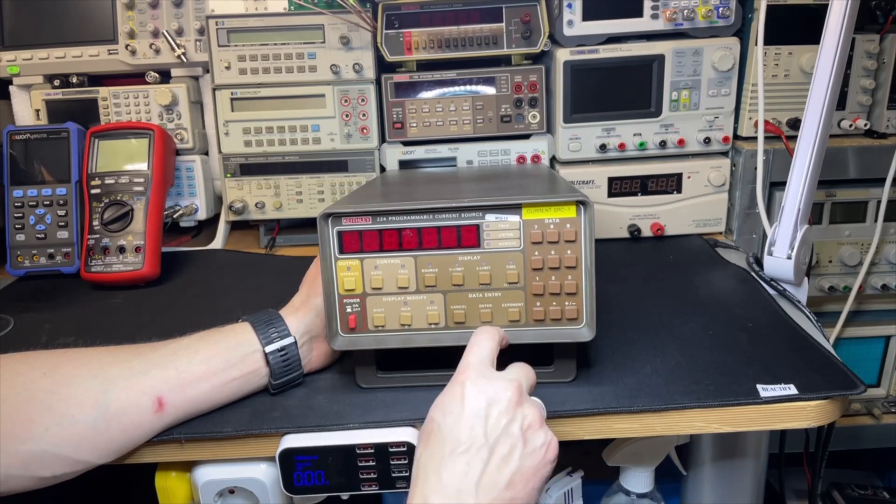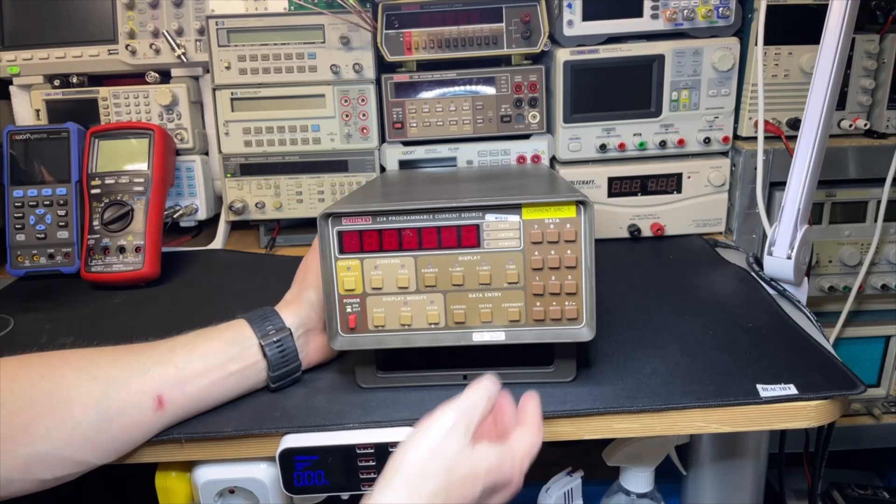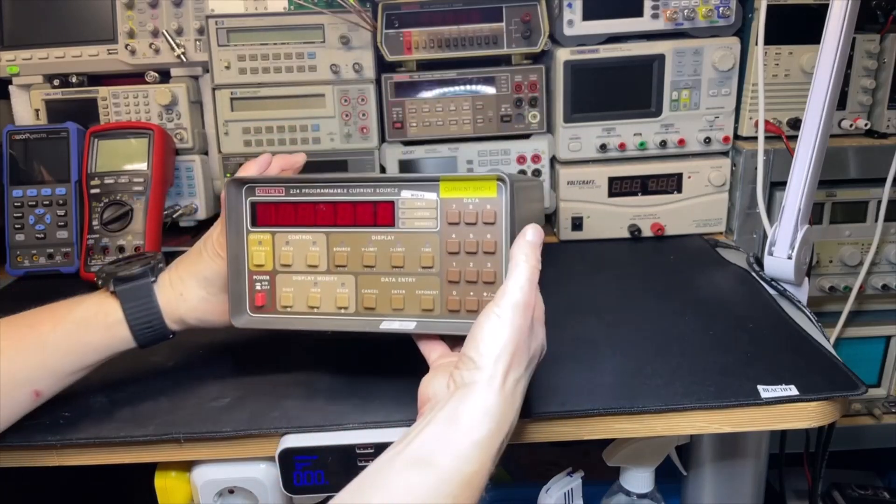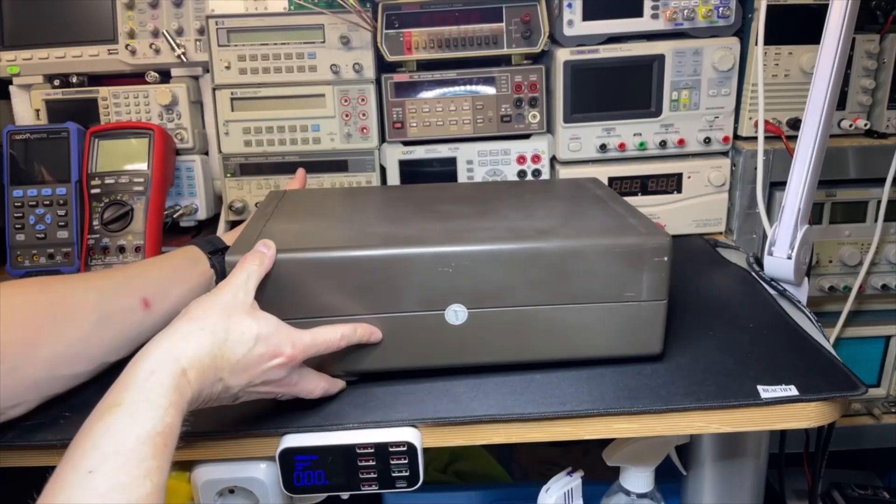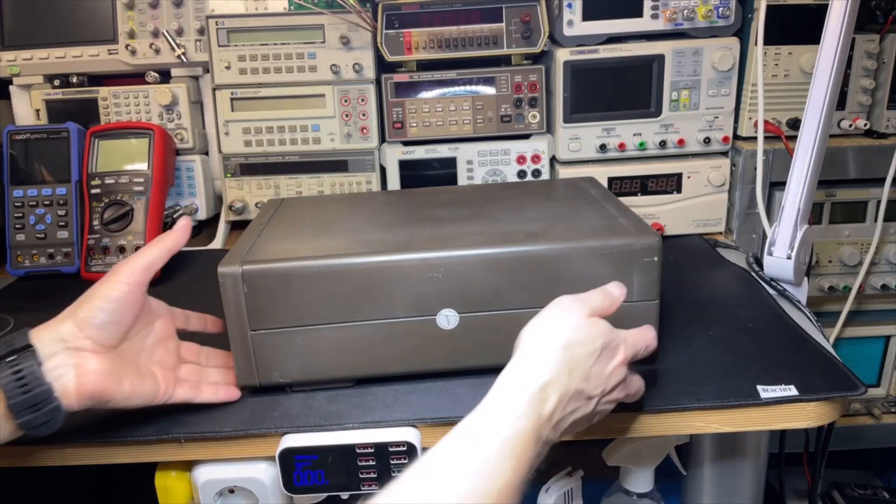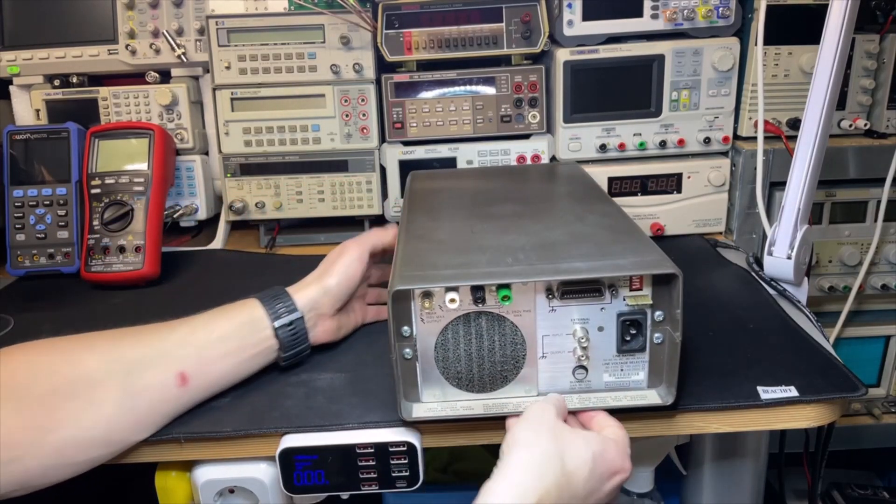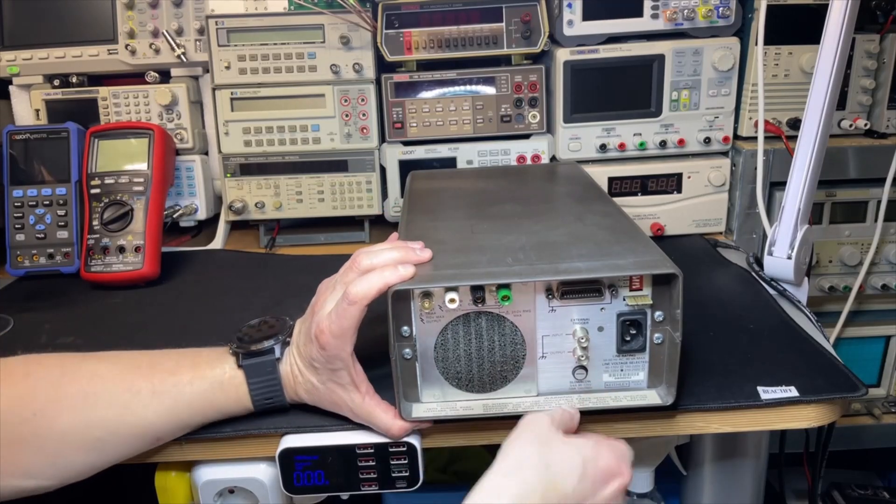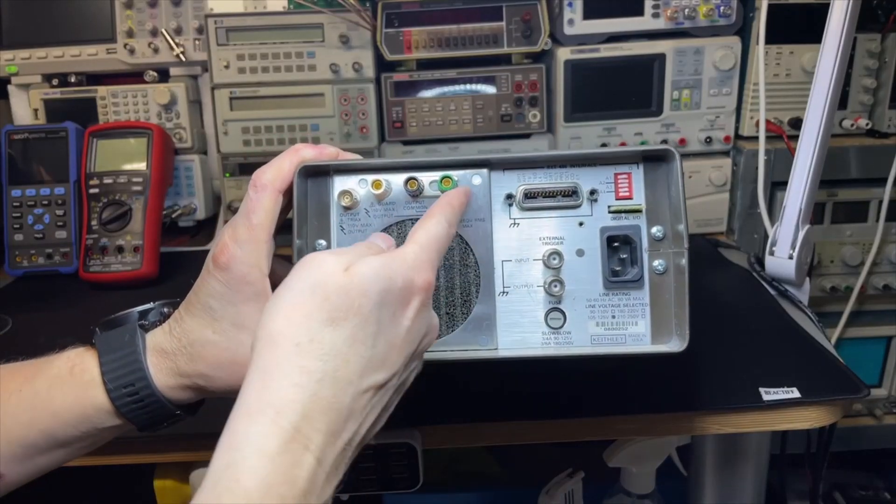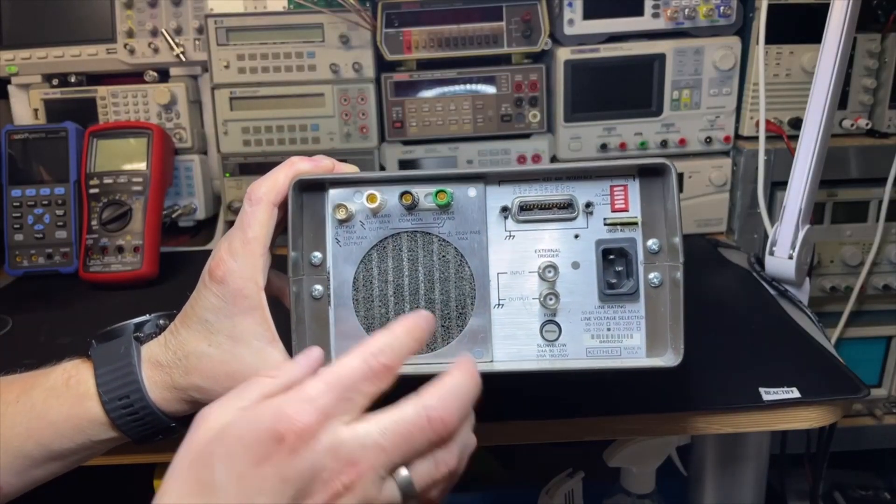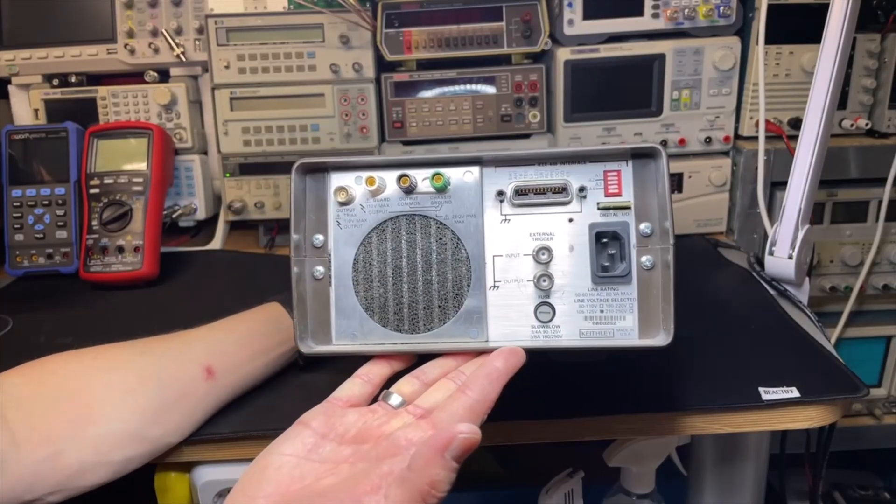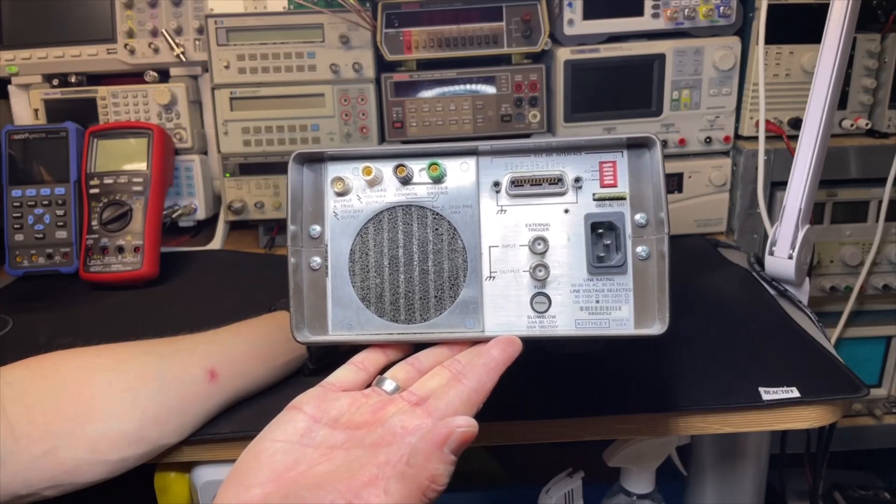They have the same size - the 199 and the 230. It's sort of heavy because it has a big power supply. Here we have the output with all shielding, and this BNC which is actually a triax - a double shielded BNC connector.